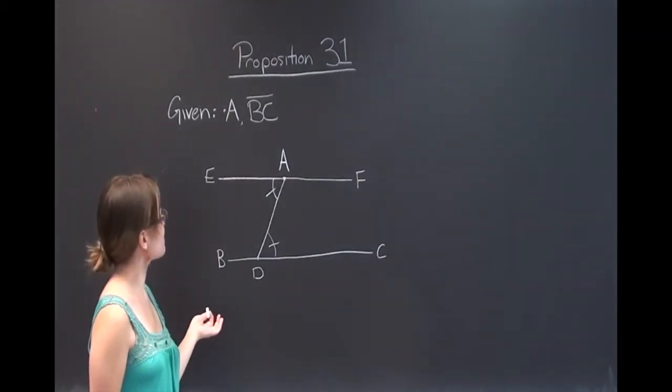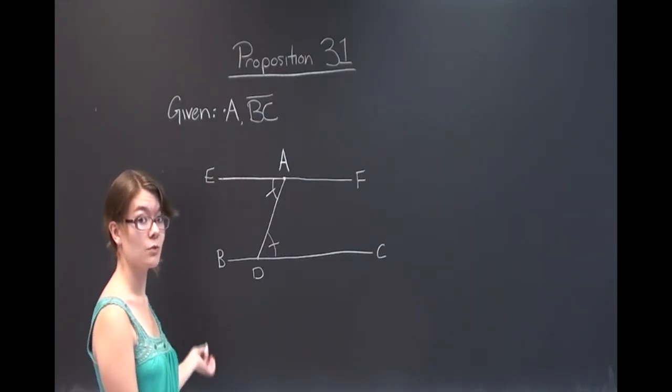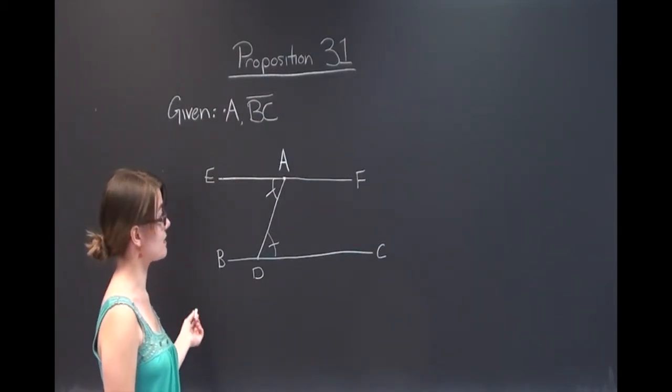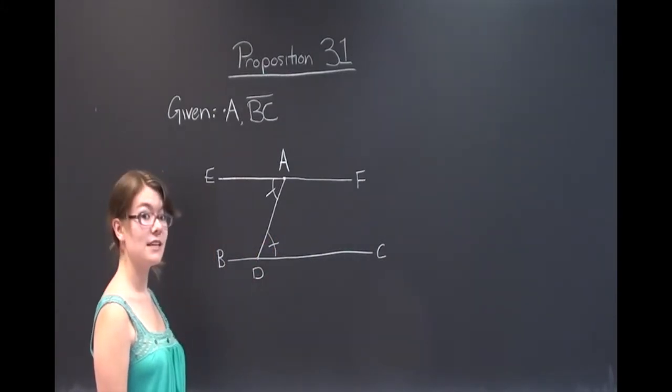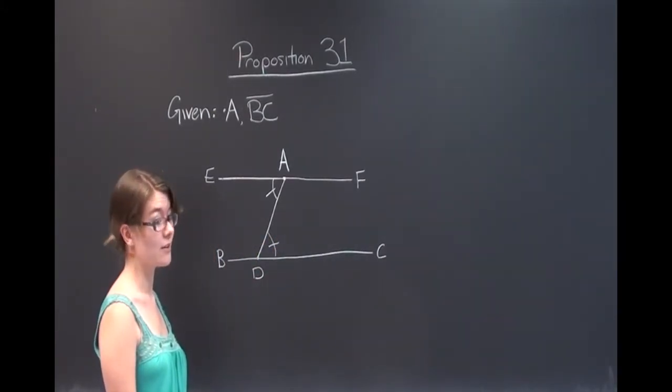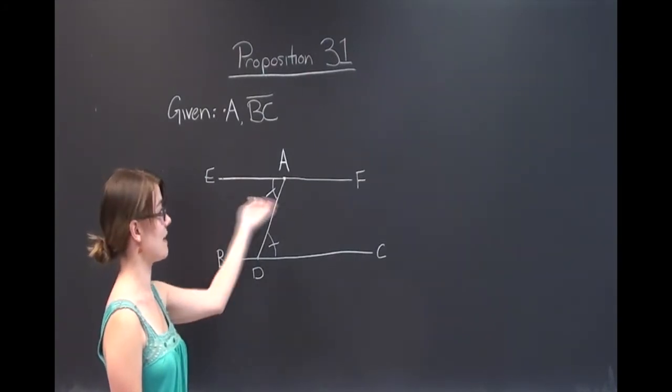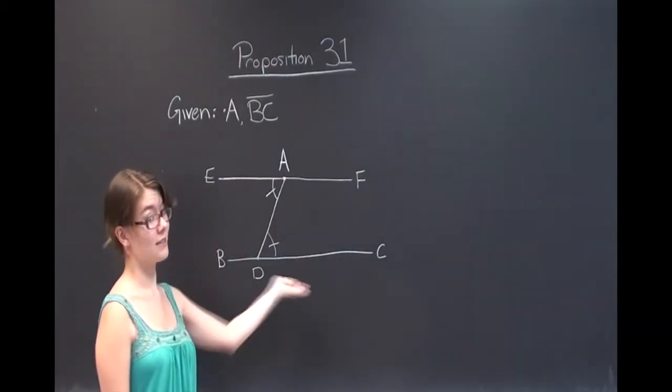We know that because Proposition 27 of Book 1 says that any line touching two lines, if it creates equal alternate angles then the lines are parallel. That is the case. Therefore line EF is parallel to line BC.